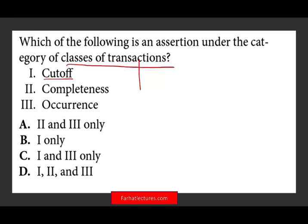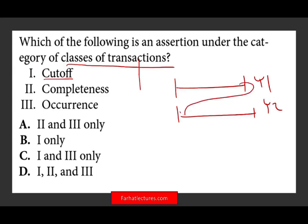The first one is cutoff. Do you know what a cutoff is? The cutoff deals with timing — did we record the transaction or the event in the proper accounting period? For example, did we push revenue from year one to year two? When we are concerned with cutoff, we are concerned with whether we shifted some revenue or expenses between periods. The cutoff deals with both understatement and overstatement, and it does deal with transactions — revenues and expenses that affect income such as net profit. So yes, cutoff is a classes-of-transaction category assertion. Definitely one is in, so we can eliminate A and the other options.